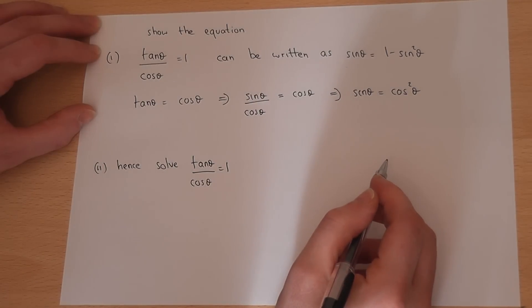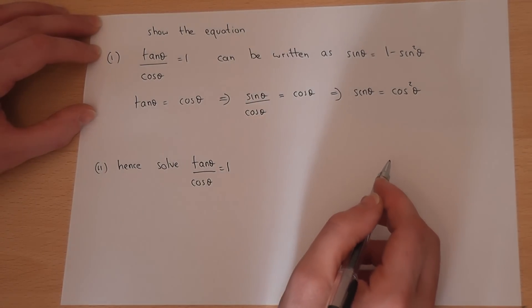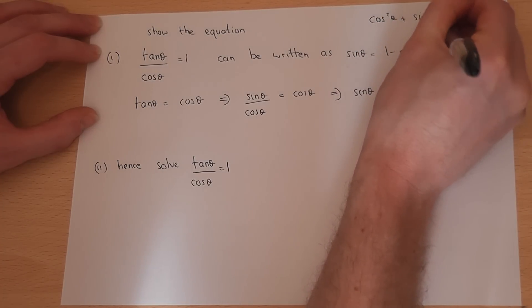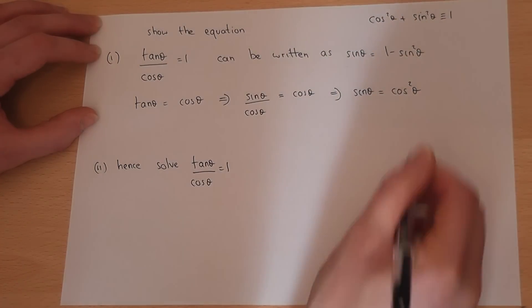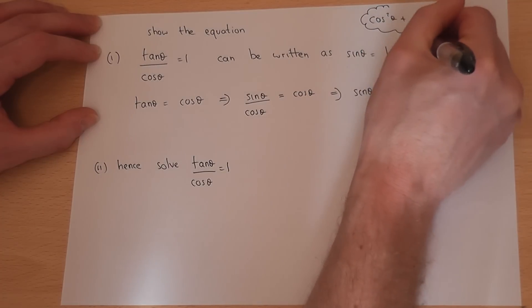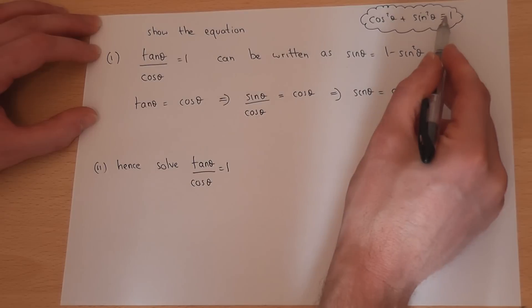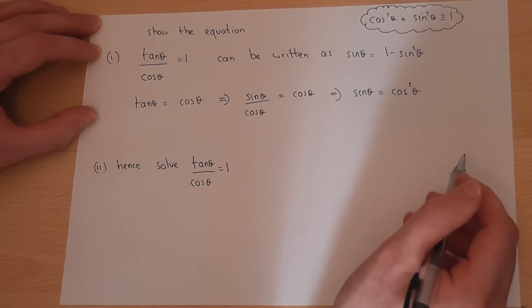However, one of the key facts or equations or identities is that cos squared theta plus sine squared theta is always 1. That is an absolutely essential fact to know. So cos squared theta must equal 1 minus sine squared theta.